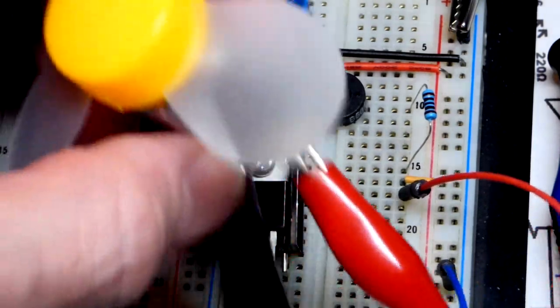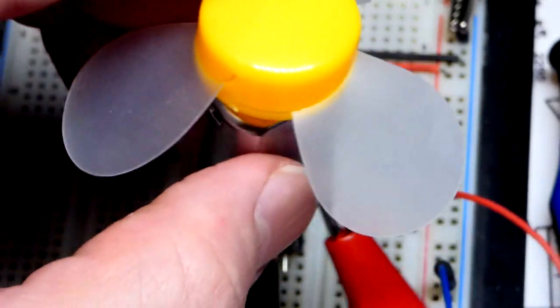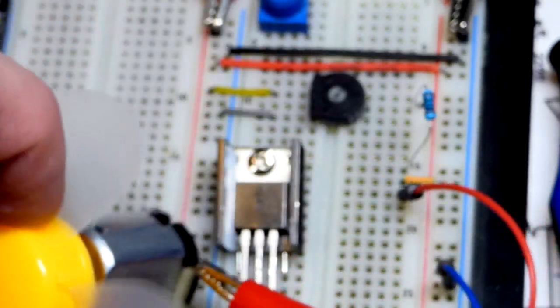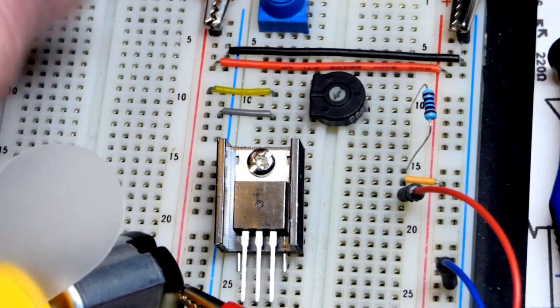In this video we're going to control the fan again, or actually the motor - I just have this little flower-looking blade on there. We're going to use the trim pot to set a variable voltage. Last video we just adjusted the voltage of the power supply.